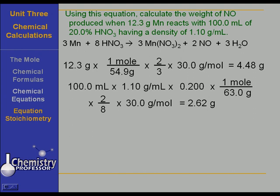Now, how much nitric oxide could be produced? What is the limiting reagent? Well, the limiting reagent apparently is that nitric acid. How do I know? Because only 2.62 grams of the nitric oxide could be produced. We ran out of nitric acid before we ran out of manganese. Now, here's a good question.